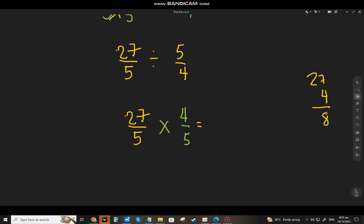27 times 4, that will be 108 over 25. And that is already the final answer in lowest terms. Let's change it to a mixed number.